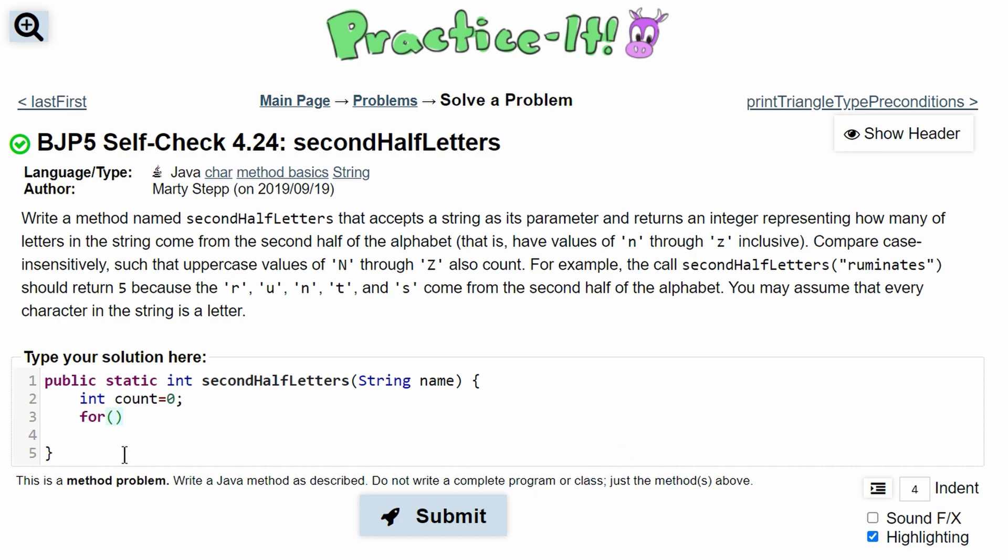So we have for int a equals 0, a has to be less than word length. And this is because we are running only the length of the word. And then we are going to do a++. That way we can eventually break out of our loop.